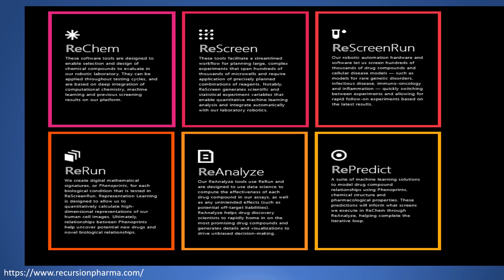Recursion Pharma has a suite of products covering the end-to-end lifecycle of drug design. It starts with defining the chemical compounds, then determining how to combine them and which combinations need to be tested. It generates scientific and statistical experiment variables that enable quantitative machine learning analysis and integrate automatically with laboratory robotics. Their robotics automation hardware and software lets them screen hundreds of thousands of drug compounds across cellular disease models such as rare genetic disorders, infectious disease, immunology, immuno-oncology, and inflammation, enabling rapid follow-on experiments based on the latest results.